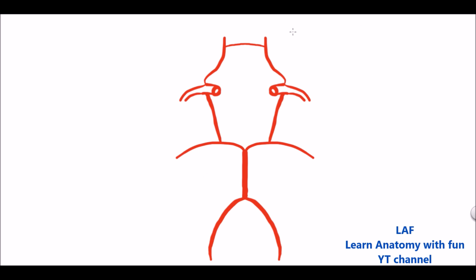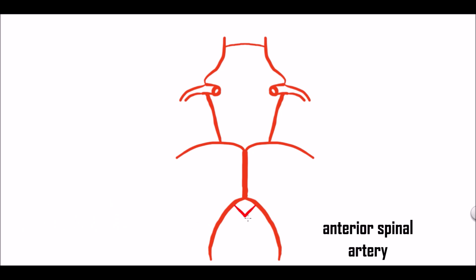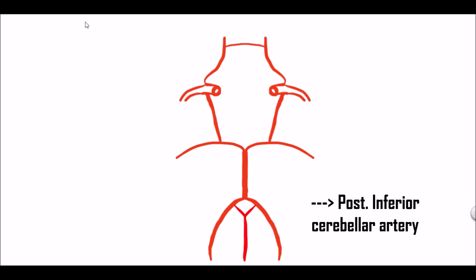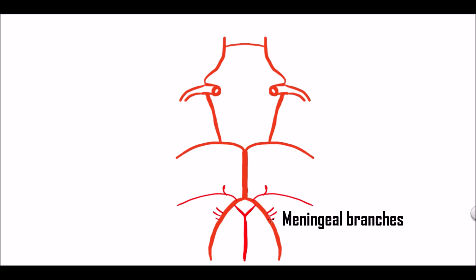Let us first see the branches of the vertebral arteries. This is the anterior spinal artery, which unites and forms the median trunk, and it runs along the anterior median fissure of the spinal cord. Next we can see the posterior inferior cerebellar artery. Here we can see the posterior inferior cerebellar artery. And this one is the posterior spinal artery — sometimes it may arise from the vertebral artery, sometimes it may arise from the posterior inferior cerebellar artery. The next branch is the meningeal branches which supply the meninges of the brain. And here we can see the medullary branches which supply the medulla oblongata. So these are the branches of the vertebral artery.